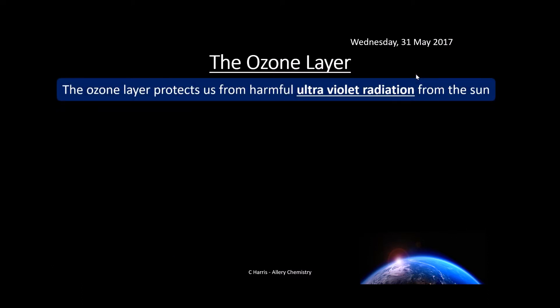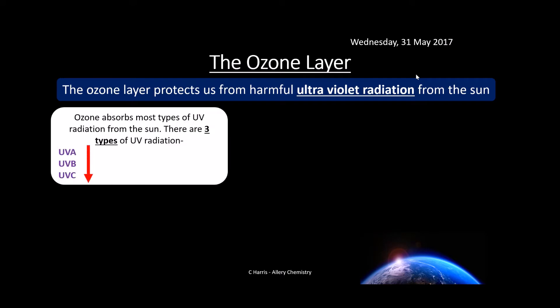The ozone layer is really important because it protects us from harmful UV radiation from the sun. Too much UV isn't good for us, though we do need some, as we'll find out in a minute. Ozone absorbs most types of UV radiation from the sun. There are three main types: UVA, UVB, and UVC. As we tend towards UVC we've got more energy and a higher frequency.